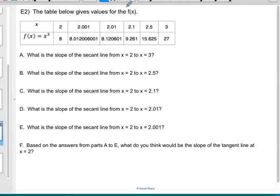Example two, the table below gives some values for f(x). f(x) is x cubed. So what we're going to do is we're going to calculate the slope of the secant line between two points on this table over and over and over again, and we'll use the calculator to help us.